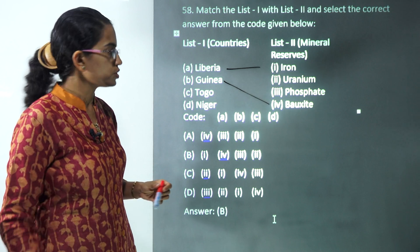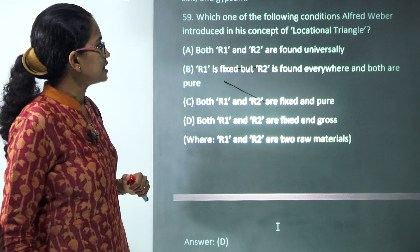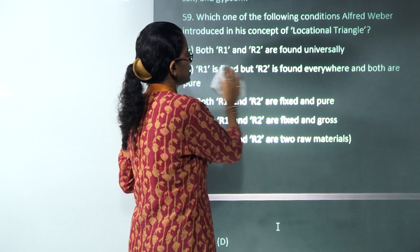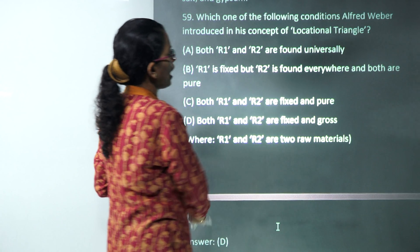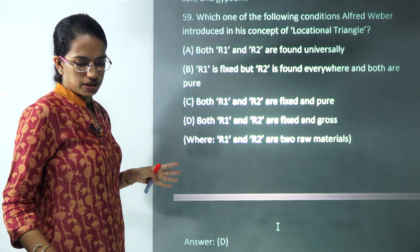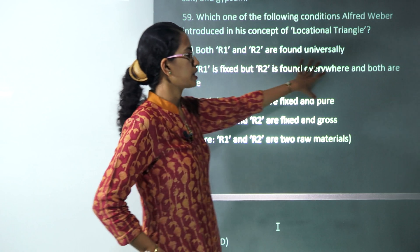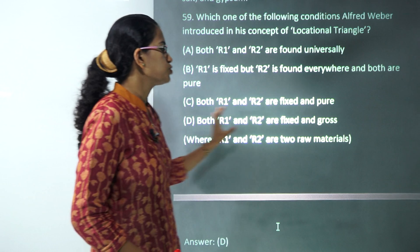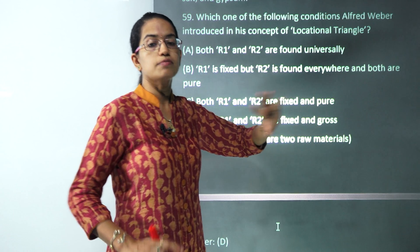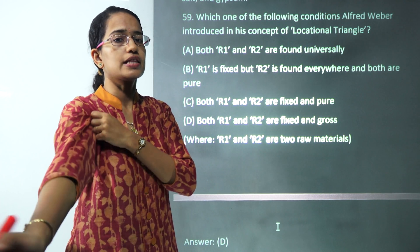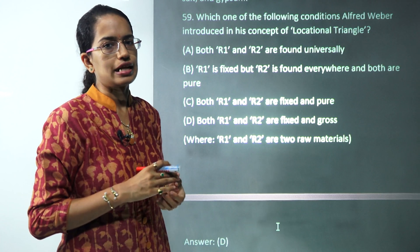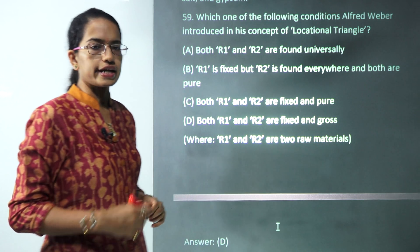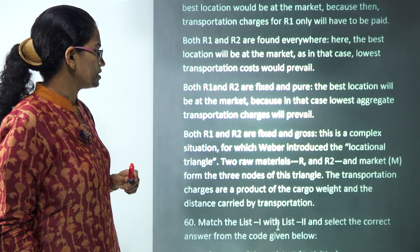The next is a very important and interesting question from Weber's theory. Four conditions are given; the first three allow you to say directly that the location would be closer to the market. But when both R1 and R2 are fixed and gross, it becomes a complex situation and you need a locational triangle to understand it. So 'both R1 and R2 are fixed and gross' is the correct option.